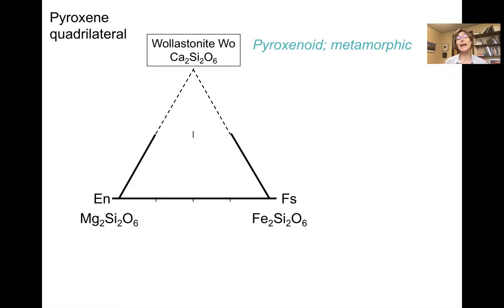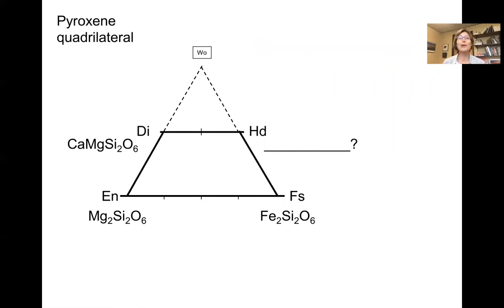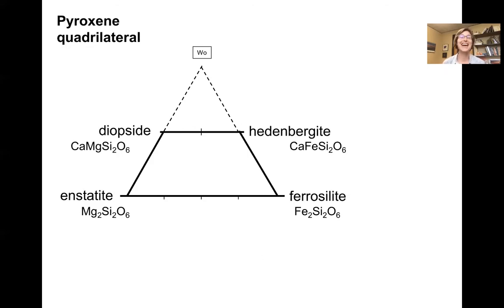But that wollastonite is a pyroxenoid should give us a hint that this is not part of our understanding today. So instead we're going to just chop off the top part of this ternary diagram, making the quadrilateral below. So we've not chopped it anywhere randomly, we've chopped it at a very specific point, which is where we have a pyroxene that has half of its M or metal sites filled with calcium and half of the sites filled with magnesium. And that of course is the pyroxene diopside. On the other side we have the pyroxene hedenbergite. Can you anticipate what the composition is of hedenbergite? Hopefully you got that it's a calcium iron pyroxene.